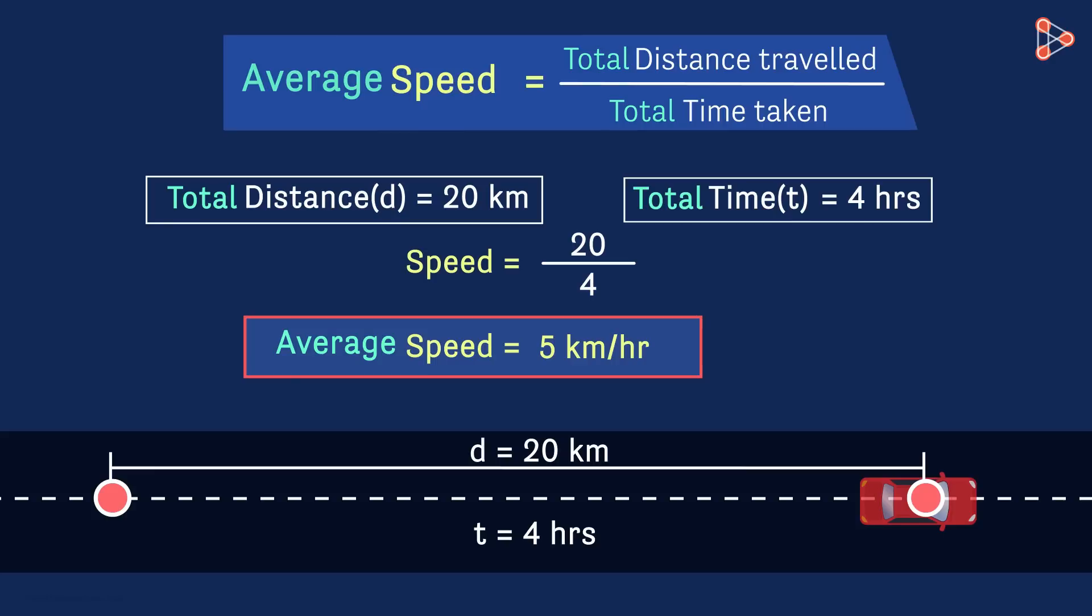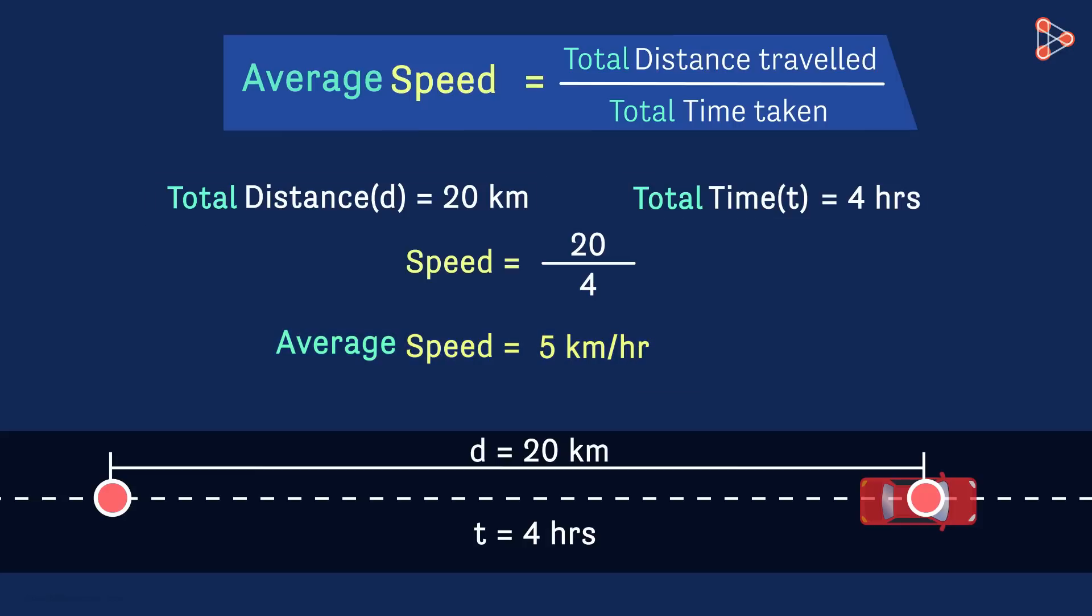I am sure that you are clear with the idea of average speed now. So what's next? Look at the unit of speed used in the example. The unit of speed in this example is kilometers per hour or kmph and it is one of the most common units of speed.